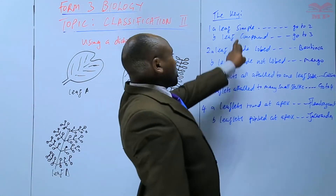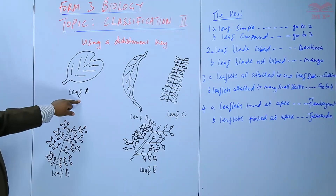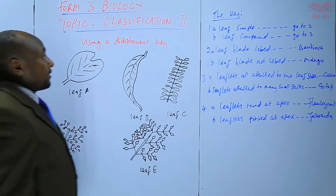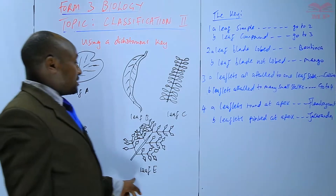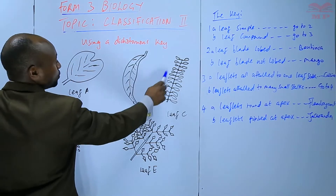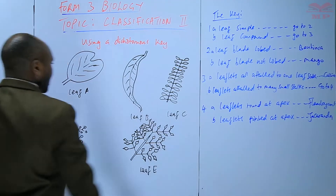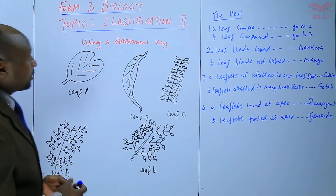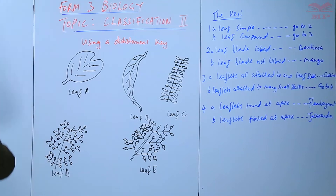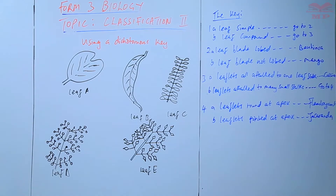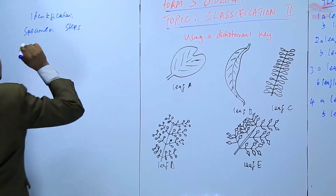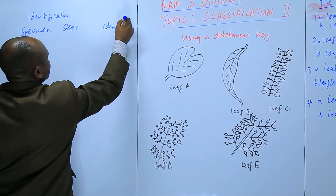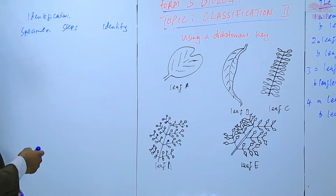The first step: we check which leaves are simple — A is a simple leaf and B is a simple leaf as well. Then we check which leaves are compound: C is compound, D is compound, and E is also compound. Compound leaves are divided into leaflets — they have many leaflets. We will construct an identification table with columns for the specimen, the steps, and then finally the identity.